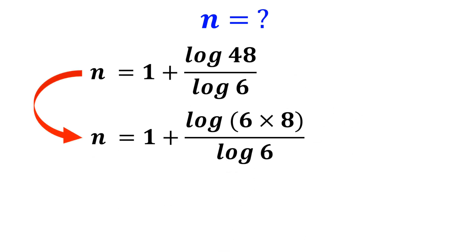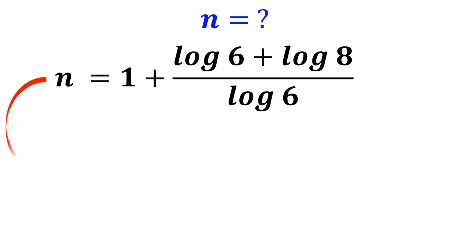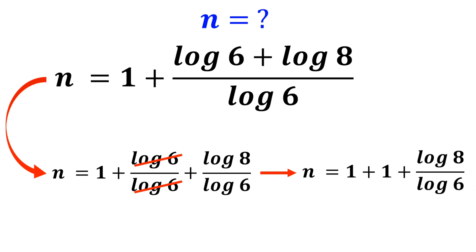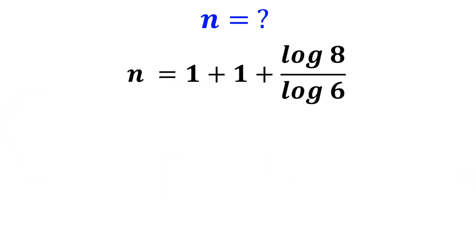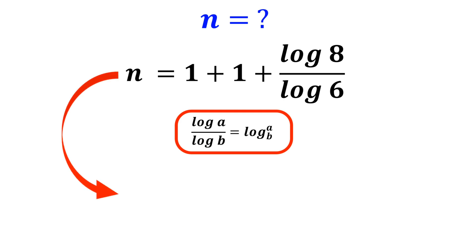This equation equals 1 plus log of (6 times 8) over log of 6. We rewrite this as n equals 1 plus (log of 6 plus log of 8) over log of 6, which simplifies to n equals 1 plus log of 6 over log of 6 plus log of 8 over log of 6. The log of 6 terms cancel out, giving n equals 1 plus 1 plus log of 8 over log of 6. According to the change of base rule, log of A over log of B equals log of A with base B. So n equals 2 plus log of 8 with base 6.